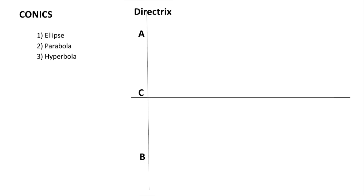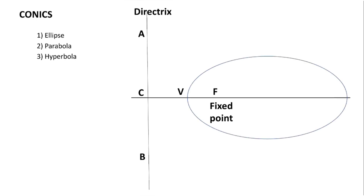The intersection point of these two lines I am naming as point C. Now it comes the fixed point F. Let's say any one point on the curve is named point P. When I take the ratio of PF to PC, that ratio is always constant, and I am naming this ratio as eccentricity E.